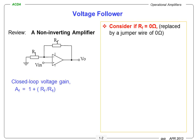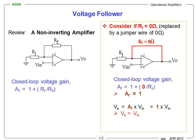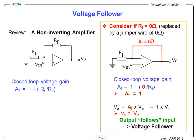What happens if RF equals 0 ohm, or RF is replaced by a jumper wire of 0 ohm? The circuit will look like this, and the closed loop voltage gain AF becomes a value of 1. This means that the output voltage becomes the same as the input voltage — we say the output voltage follows the input voltage, and we call this circuit a voltage follower.